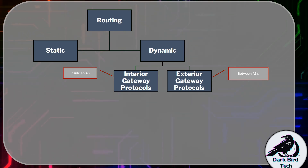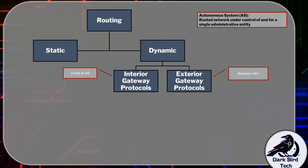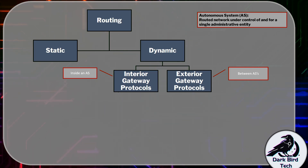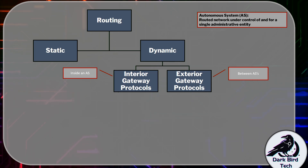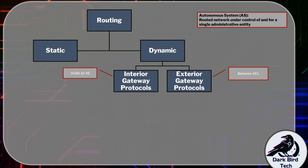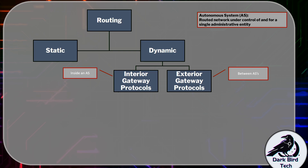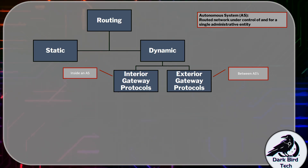Let's talk about what is an AS. An AS, or autonomous system, is a routed network under the control of and for the use of a single administrative entity. If you are working in an enterprise network, that can be considered an autonomous system. Your ISP is also an autonomous system, which means that every ISP that connects to every other ISP and subsequently helps make up the internet becomes an AS.